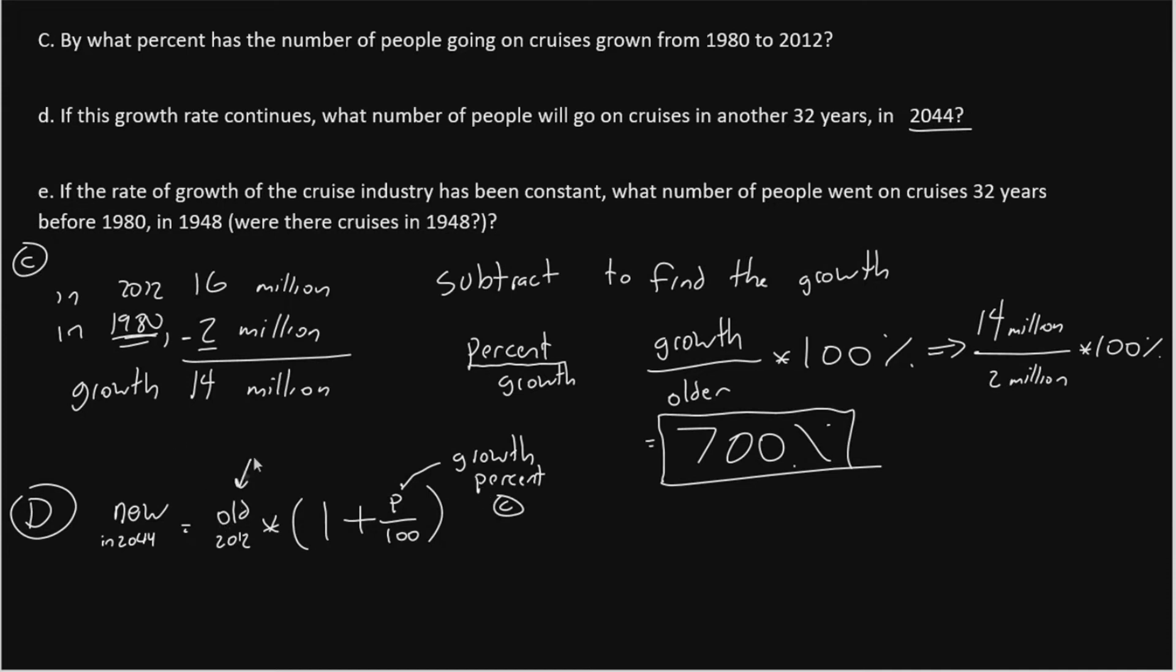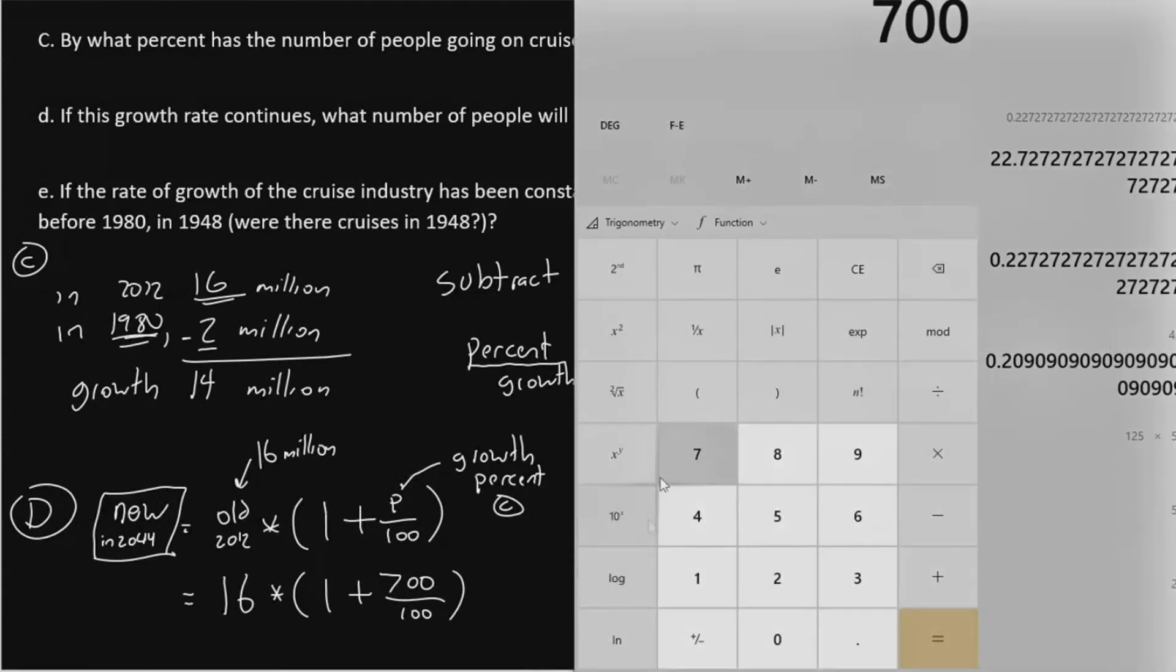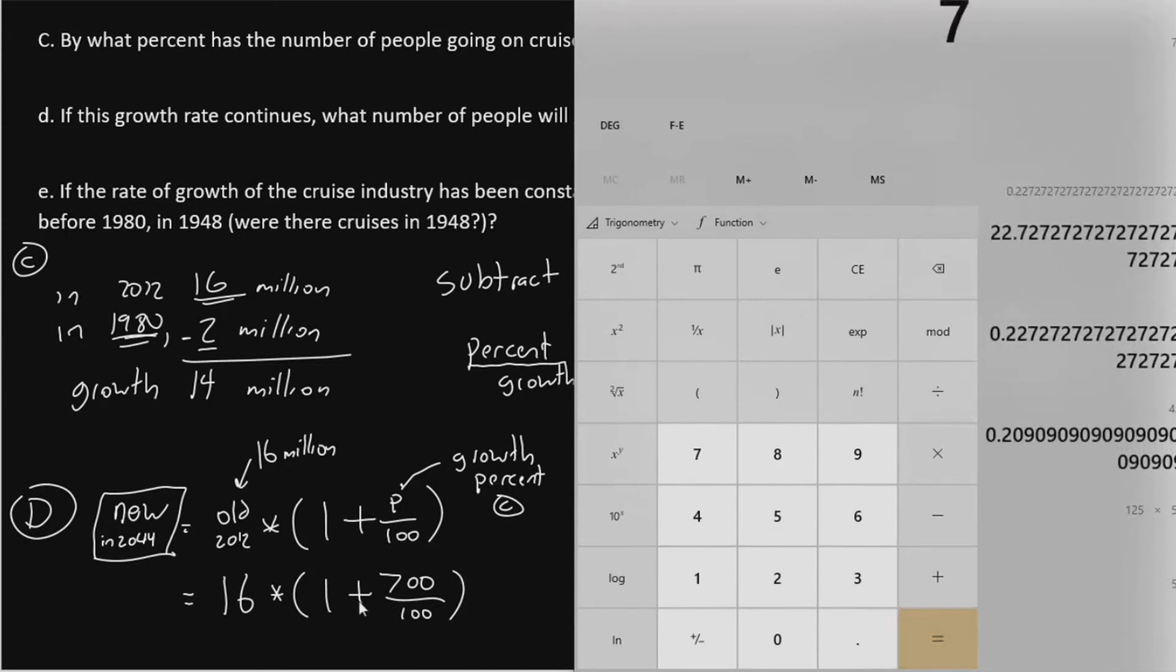The old amount of people from 2012, the number of people who went on cruises in 2012, we found previously was 16 million. And then the new amount in 2044, we don't know, so we'll have to do the math to figure that out. So we'll take 16 in this position, multiply times 1 plus my growth percent, which is 700, divide by 100. So now, what I'll do is say 700 divide by 100 give 7, and then add 1.